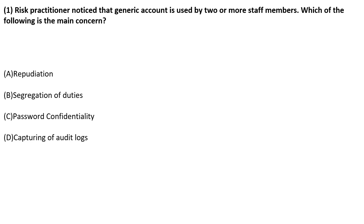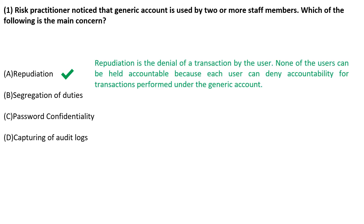Now let us discuss some practice questions. A risk practitioner notices that a generic account is used by two or more staff members. Which of the following is the main concern? Repudiation — repudiation is the denial of a transaction by the user. None of the users can be held accountable because each user can deny accountability for transactions performed under the generic account. This is the major challenge. Other options are not as critical as repudiation.